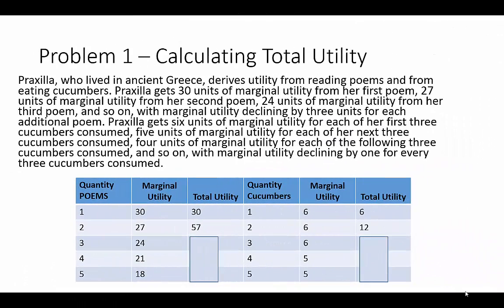For the first problem, we can break it into several parts. The first part is to take the information we're given about marginal utility — the incremental changes in utility as we consume additional units. In this case, we're consuming poems and cucumbers. The problem gives us the marginal utility columns, and from that we can calculate the total utility gained as consumption increases.